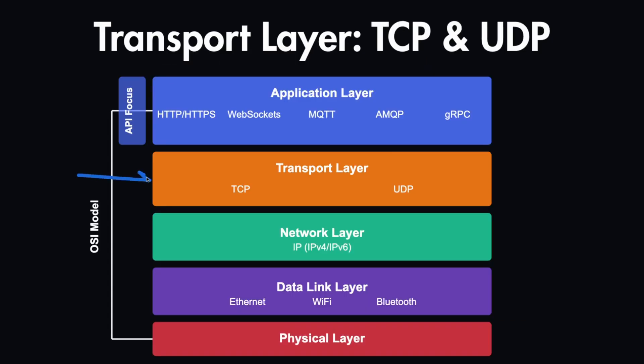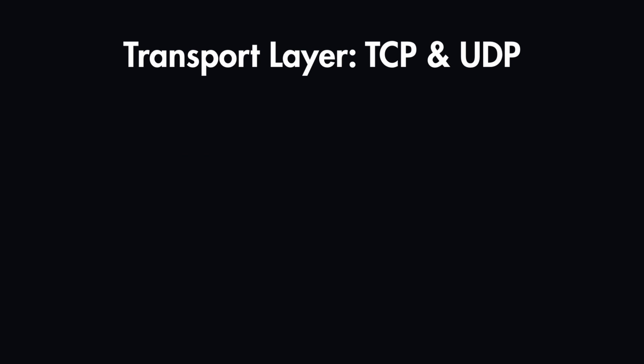That's where the transport layer comes in — the second layer in the OSI model — which contains TCP and UDP. These are both transport layer protocols, meaning they handle how data moves from one machine to another over the network, but both do it very differently. In this lesson we'll learn about these transport layer protocols.